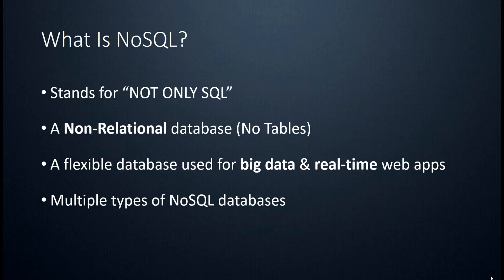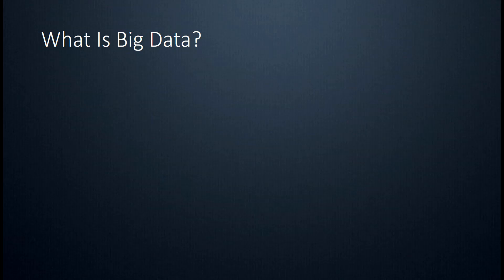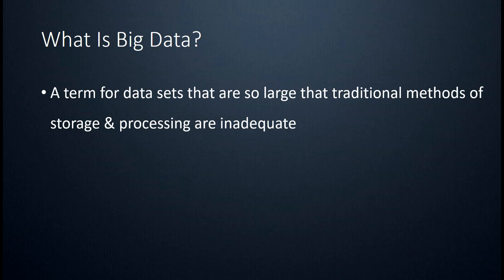There are also multiple types. We have document databases like MongoDB, column databases, key-value stores, and so on. I'll get into the specific types in a little bit. Big data is a term that's thrown around pretty often — it describes datasets that have become so large that traditional methods of storage and processing are starting to become inadequate.